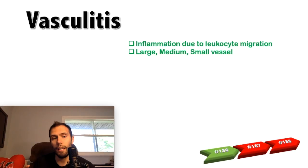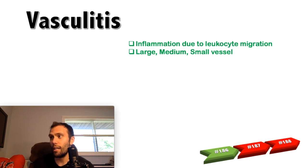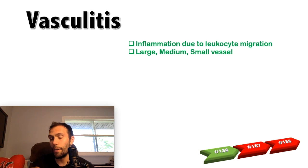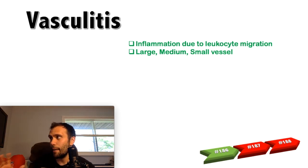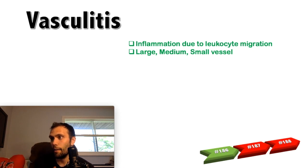Vasculitis is essentially a type of disorder that destroys blood vessels via inflammation. If we have vasculitis in an artery, we call it arteritis. If it's in a vein, we call it phlebitis. Even the lymph vessels can be affected, such as in lymphangitis. Vasculitis is primarily caused by leukocyte migration, and that migration can result in damage.